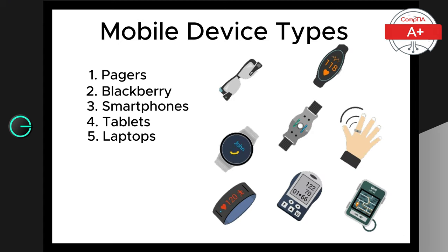Next, wearable devices are another exciting category of mobile devices. These include smartwatches, fitness trackers, and even smart glasses. They help you stay connected and monitor your health on-the-go. Brands like Apple, Fitbit, and Garmin are leading the way in wearable technology.